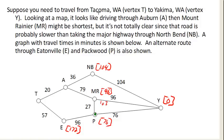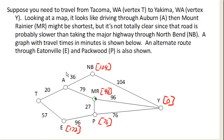Now that we're done with that vertex, we mark the next shortest vertex as current and work backwards from there. The only edge leading to it gives us 96 plus another 79, which is a total of 175.